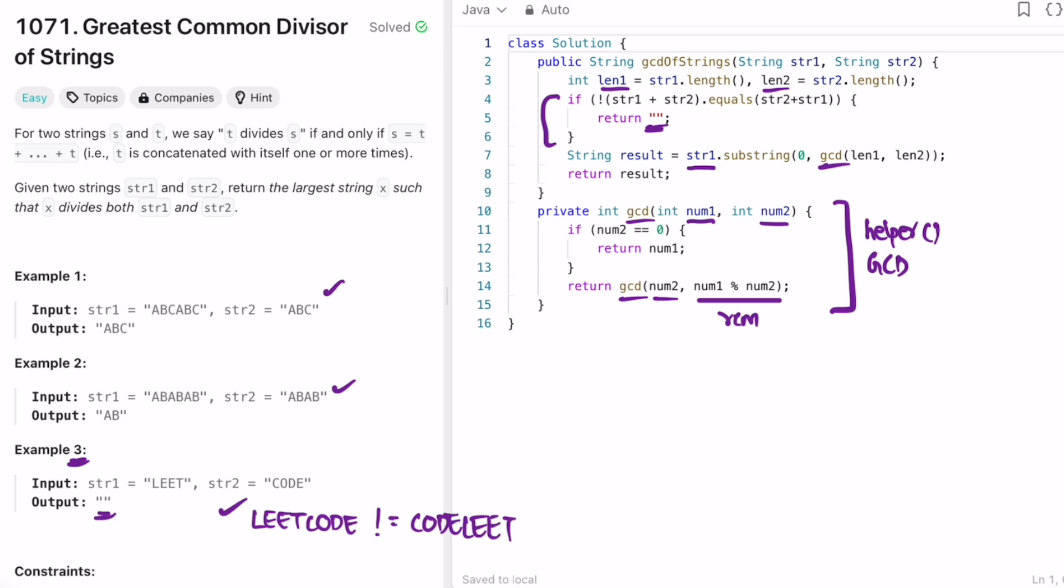We're starting from zero until the length of the greatest common divisor which we are getting from this helper function here.